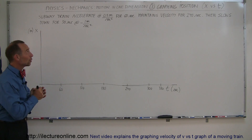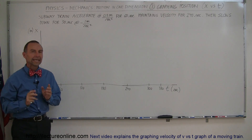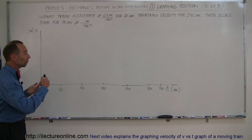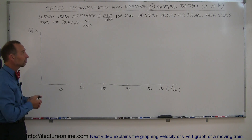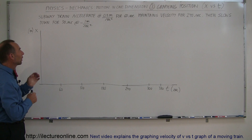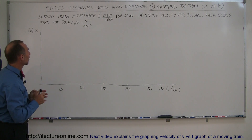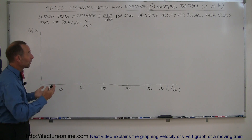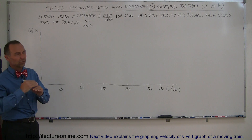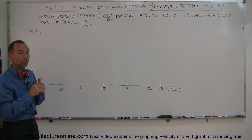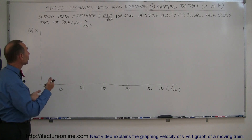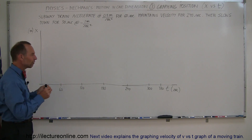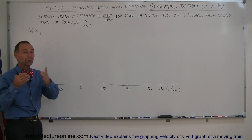Welcome to Electron Online and here's our third video on motion in one dimension. Here we're going to learn how to graph position versus time — how to graph the position of something that's moving, changing velocity, and accelerating over time. Our example: a subway train accelerates at 0.5 meters per second squared for the first 60 seconds, starting from rest, then maintains that velocity for 240 seconds, then slows down for 30 seconds at negative 1 meter per second squared. What would position as a function of time look like as the train goes from one station to the next?